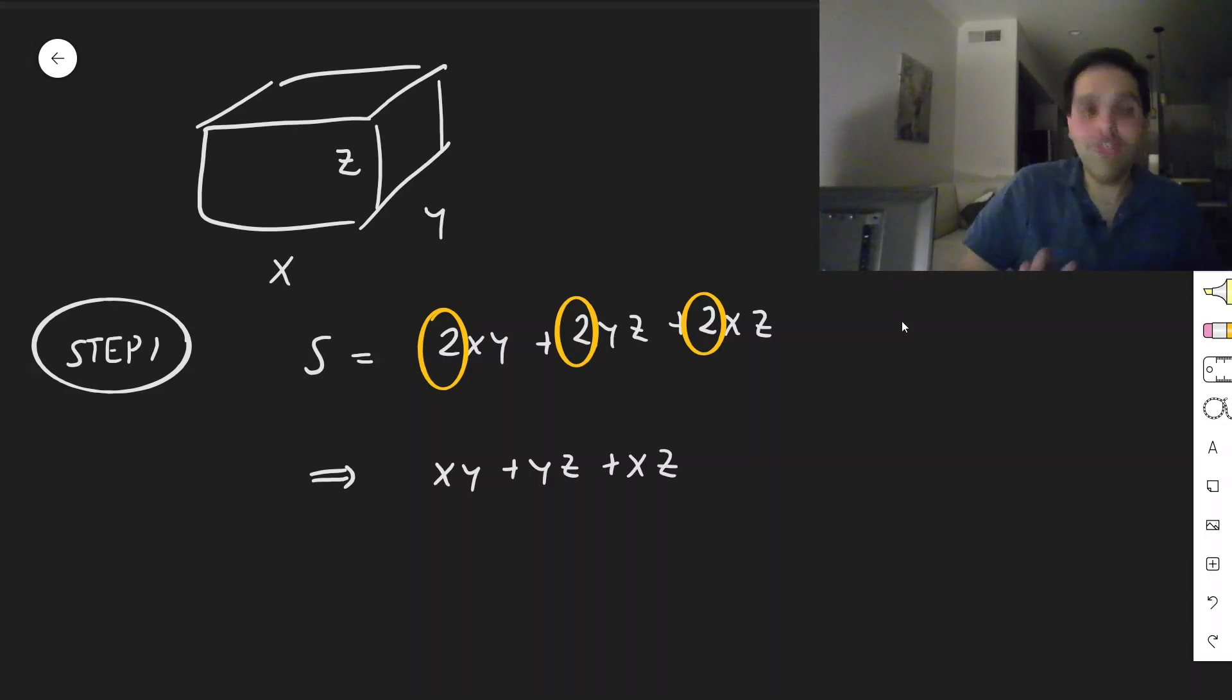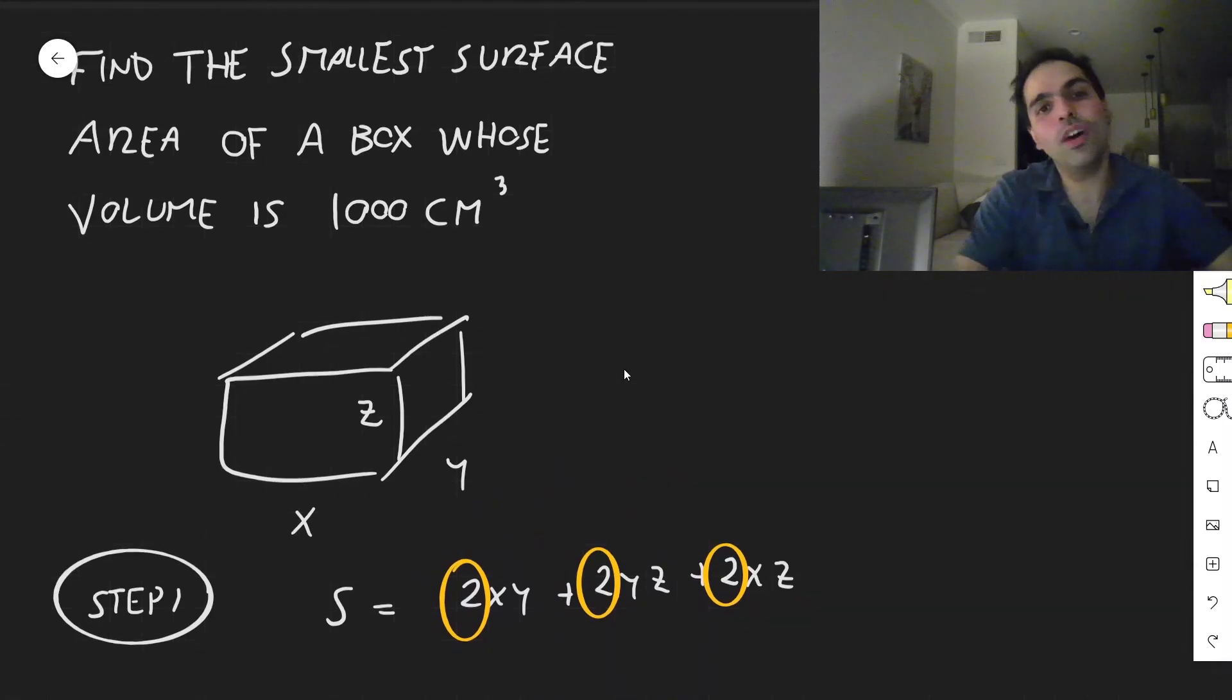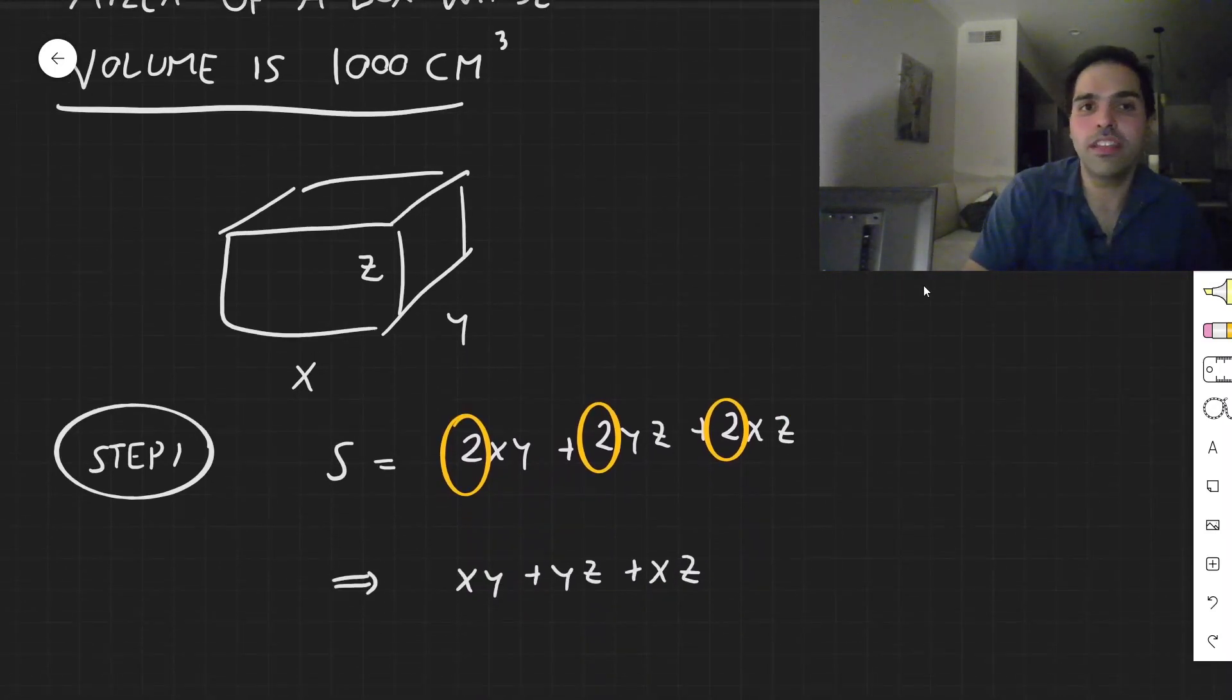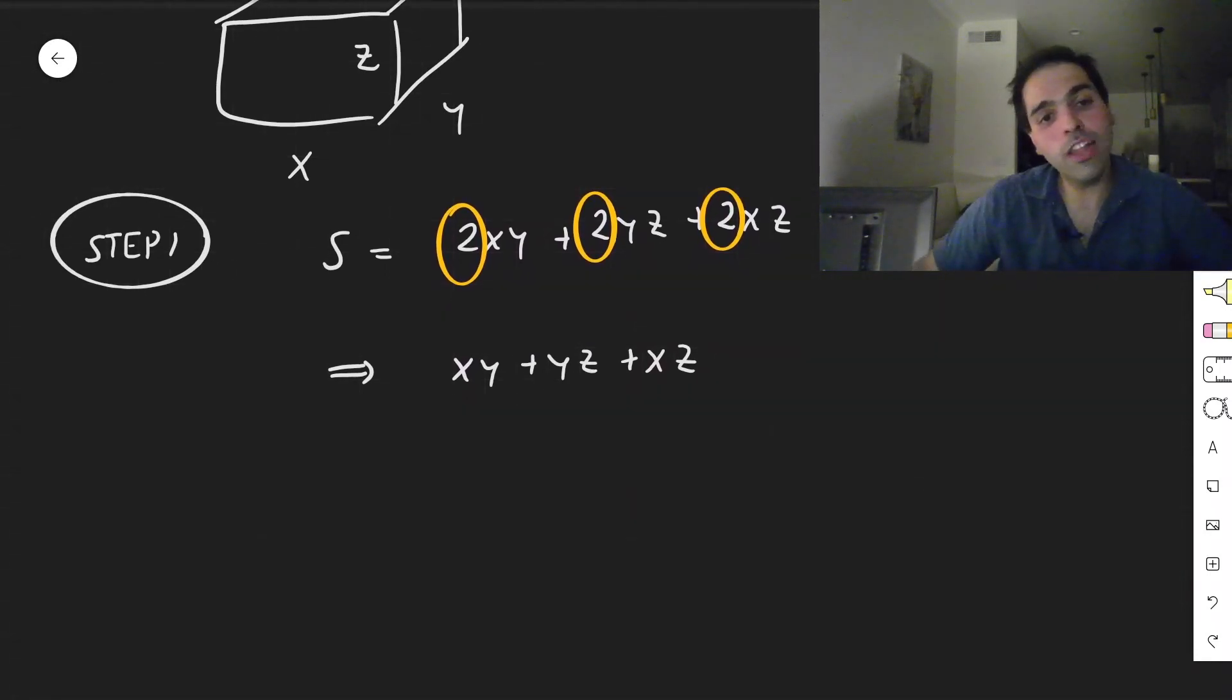And by the way, of course you could do it with Lagrange multipliers, and that will be the point of another video. But today we will just use it the classical way. Now, here's the only issue. Well, this is a function of three variables. Ideally, we would just like to have two variables. But there is one thing we haven't used yet. Namely, the fact that the volume is a thousand cubic centimeters. And this will allow us to eliminate one of the variables.